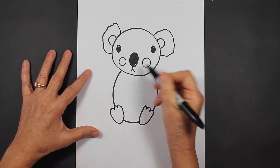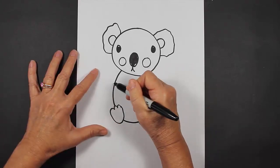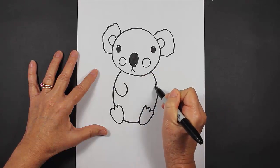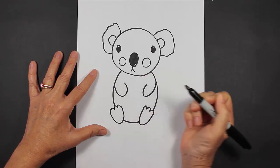Now for his hands, we're just going to come down from this line, curve around like this. Did you see what I did? Come down and we curve around like this.